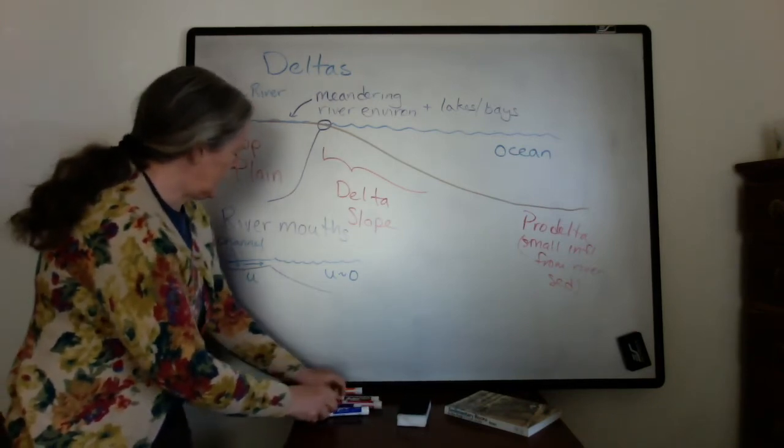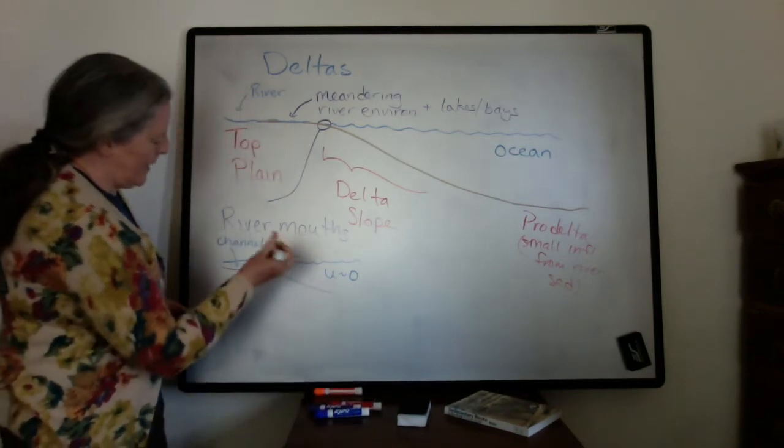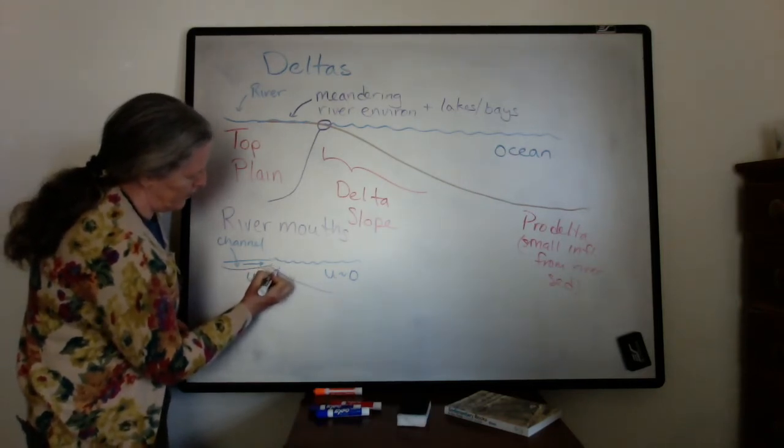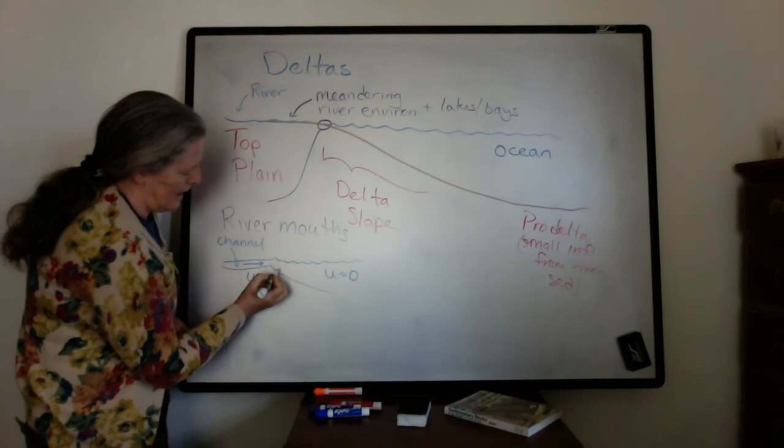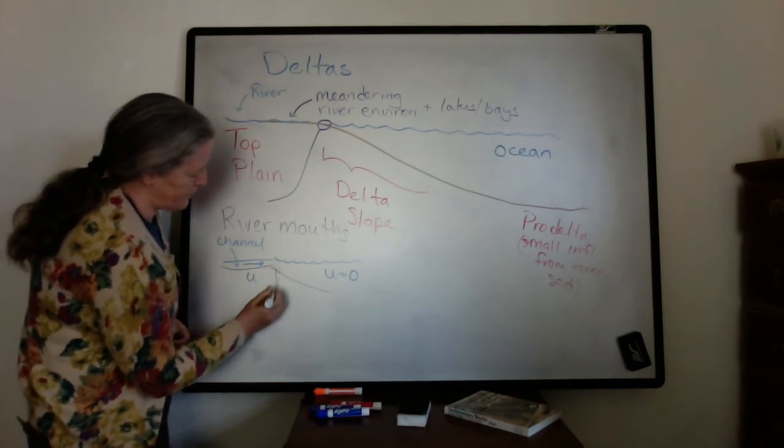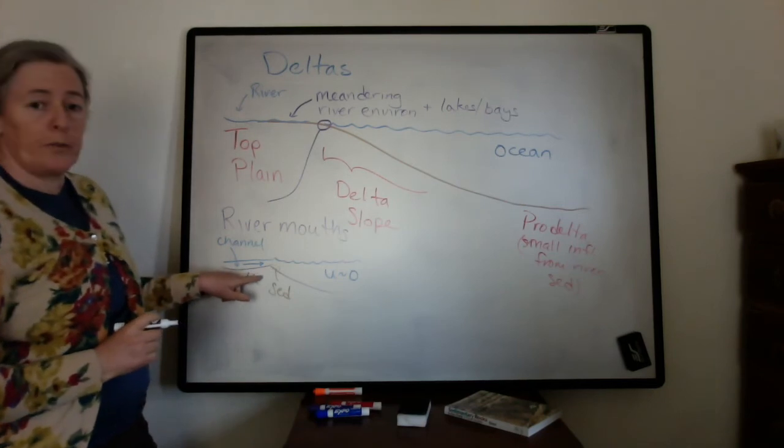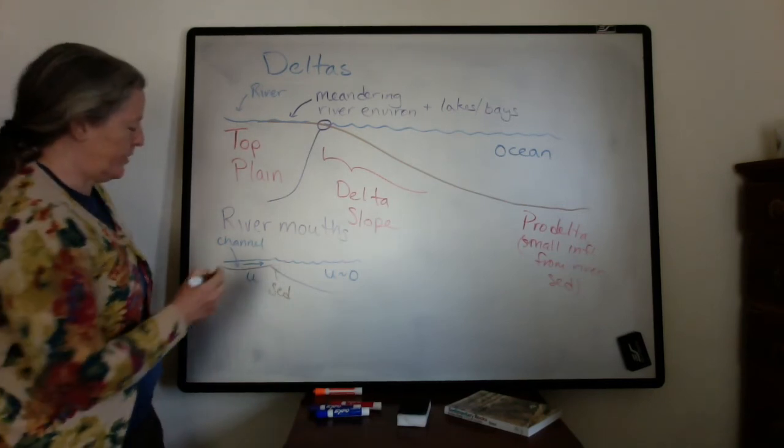What happens right at this river mouth is that you accumulate a huge amount of sediment right in that zone where the flow speed has this biggest change in flow.